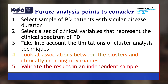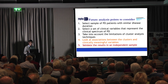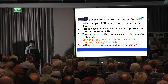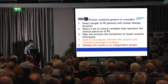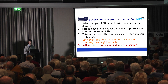For the second point, we have a huge number of questionnaires that we collect from all of you on an 18-month basis to try and capture the whole clinical spectrum of Parkinson's, and in this paper we had over 30 variables that went into the analysis. For the third point — did we take into account the limitations of cluster analysis techniques? — yes, we did try to do that.